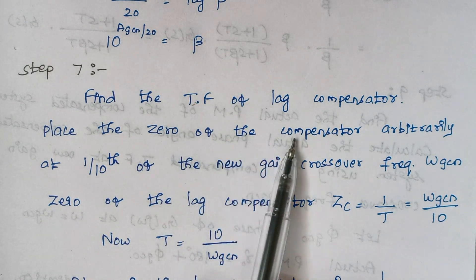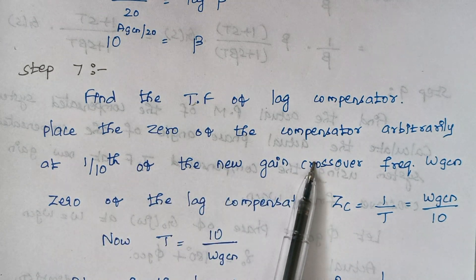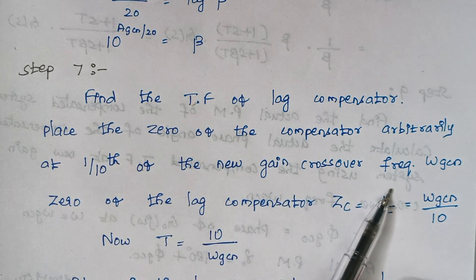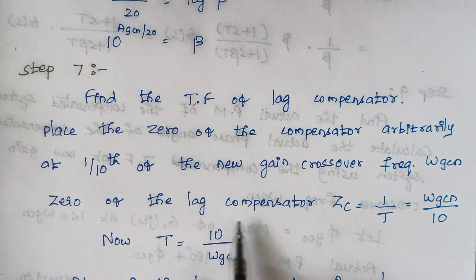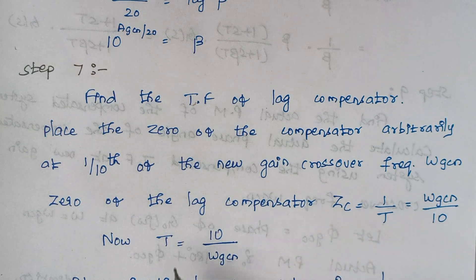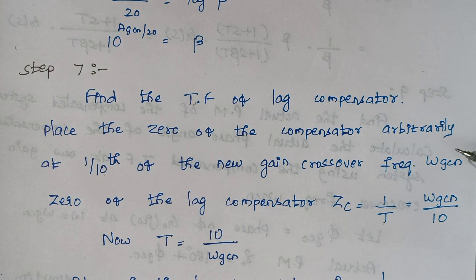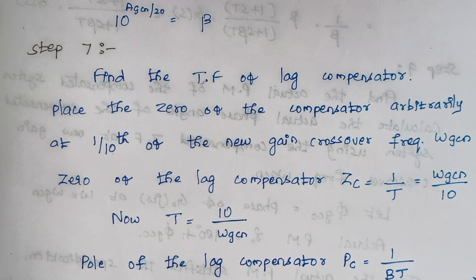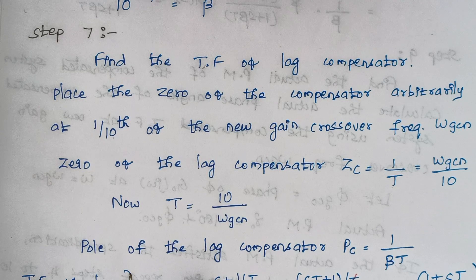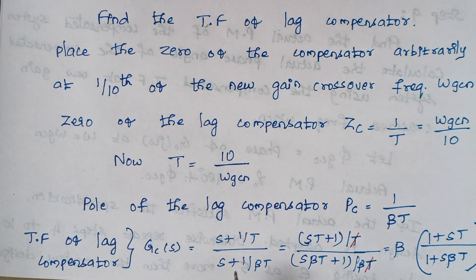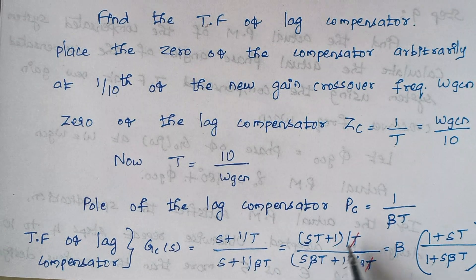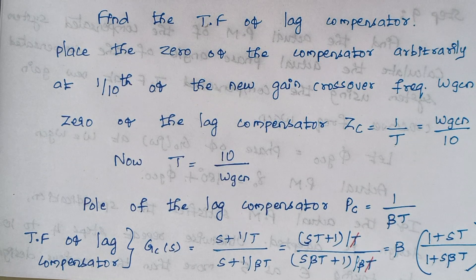Step 7 is to frame the transfer function of the lag compensator. We place the zero of the compensator at 1/10th of the new gain crossover frequency omega_GCN — so the zero is 1/T = omega_GCN / 10, giving us T. The pole of the lag compensator is 1/(beta*T). Taking the zero S + 1/T and pole S + 1/(beta*T), and simplifying, the transfer function is: beta * (1 + ST) / (1 + S*beta*T).